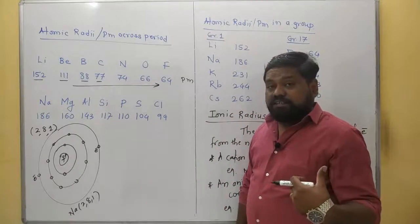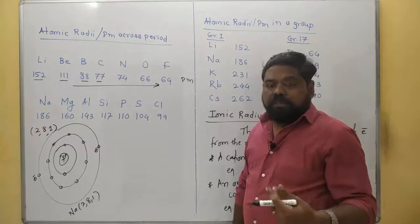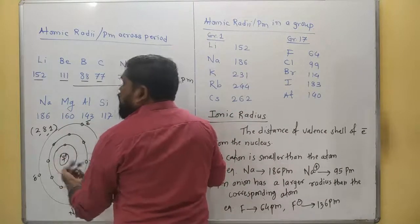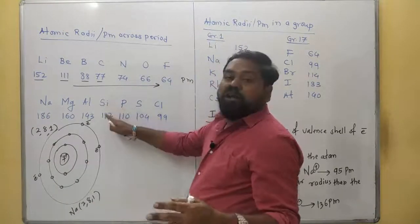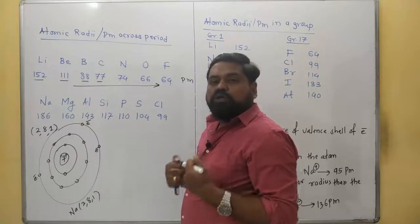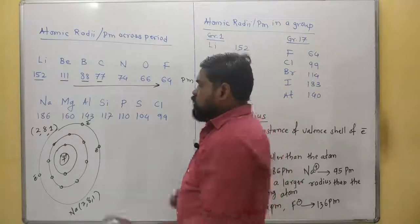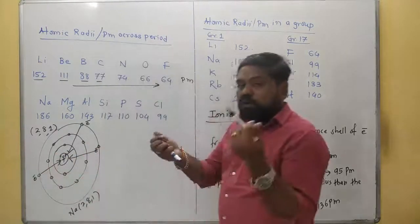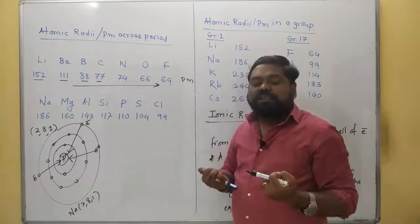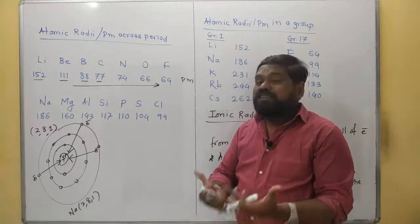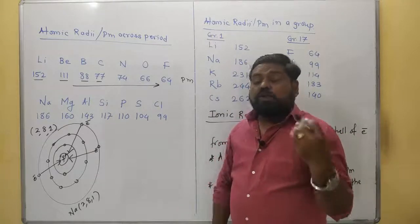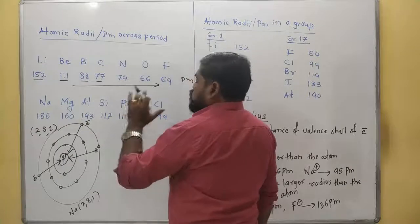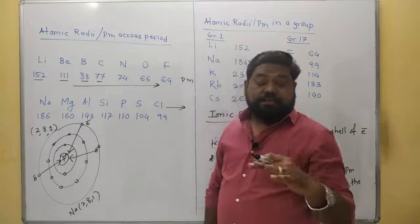Nuclear charge goes on increasing as we move from left to right, but electrons get added in the same shell. For aluminum there are 3 electrons with 13 protons, silicon is 14, and phosphorus is 15. Nuclear charge becomes more and stronger — the effective nuclear charge. The electrons present in the valence shell get pulled inwards; the nucleus attracts those electrons towards itself. That's why the size of the shell goes on decreasing, from 186 to 160 then 143, 117.